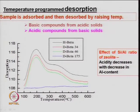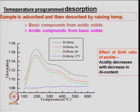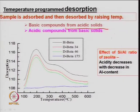Similarly, for hydrogen beta zeolites — beta 34, beta 46, beta 175 — different kinds of zeolite can be studied to get information about silica-to-alumina ratio. One can get the information in terms of desorption versus temperature, and basic compounds can be obtained from acidic solids and acidic compounds from basic — so one can get the concentration of acid and basic sites.